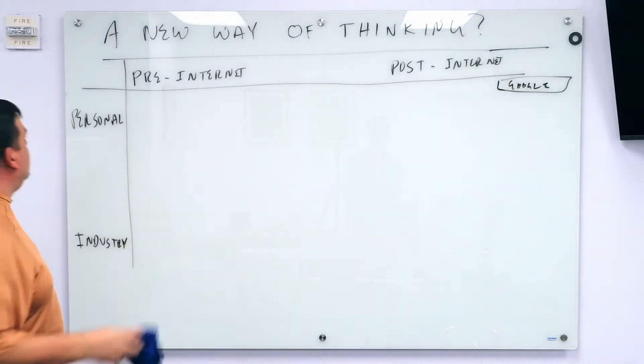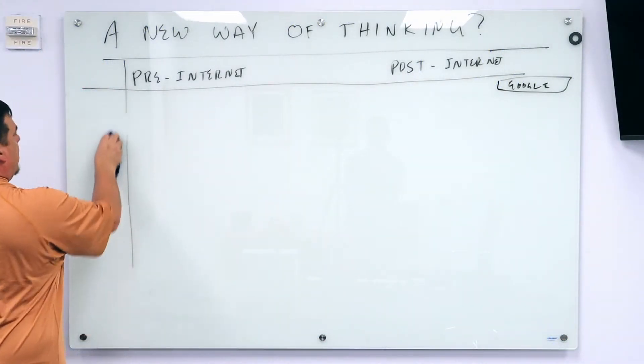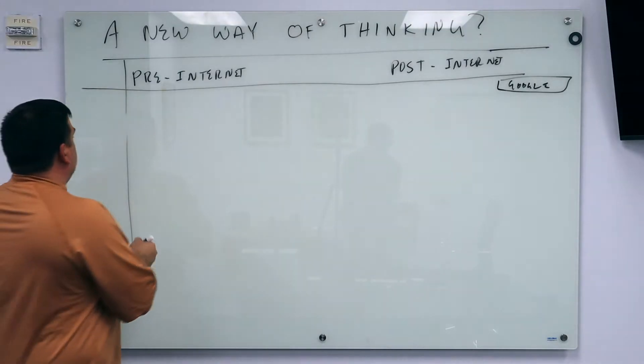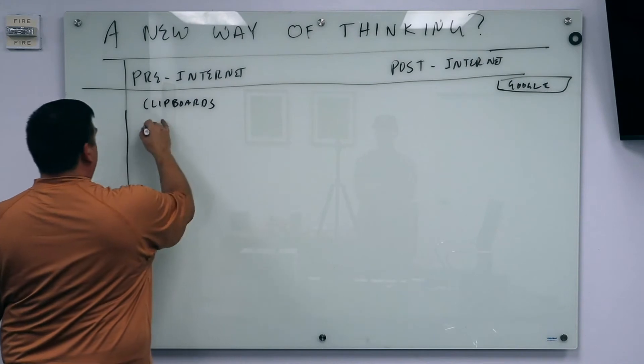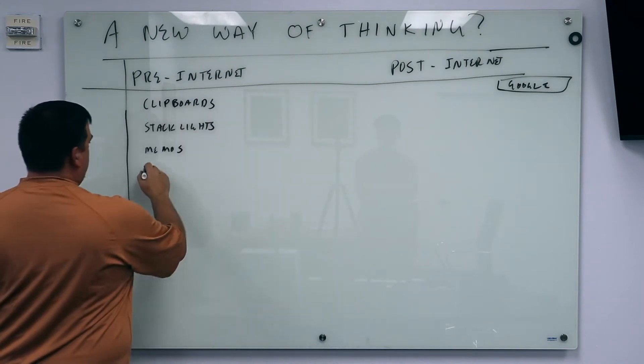Okay, let's talk about industry. In the pre-internet days, how did manufacturing facilities communicate with each other? Clipboards, stack lights, memos, telecoms.